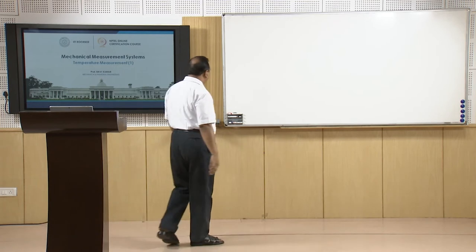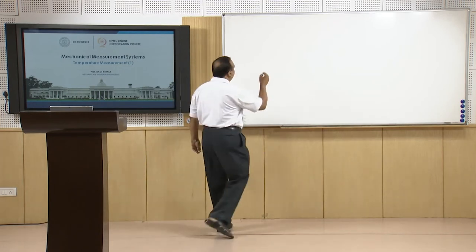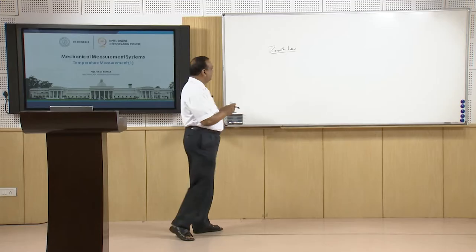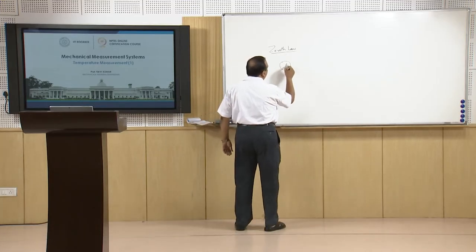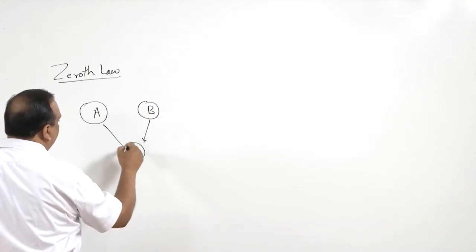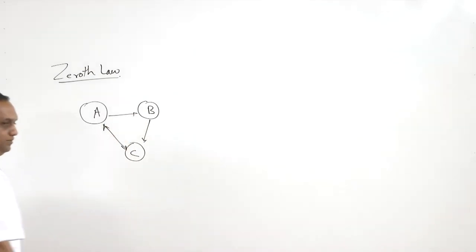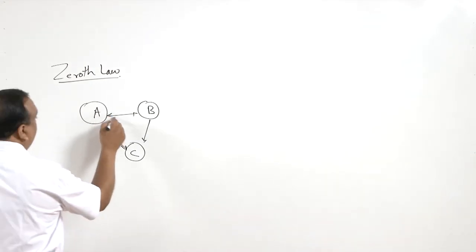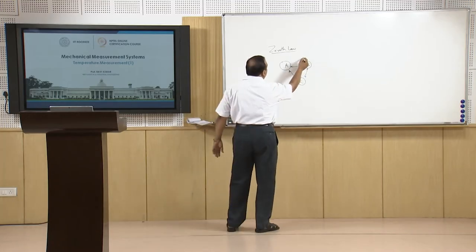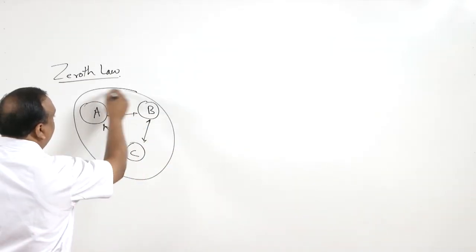When we talk about temperature, the zeroth law of thermodynamics immediately comes into the picture. The zeroth law says that if body A is in thermal equilibrium with body B, which itself is in thermal equilibrium with body C, then A and C are also in thermal equilibrium. The concept of temperature is a derivative of the zeroth law of thermodynamics, and from here the concept of temperature measurement starts.